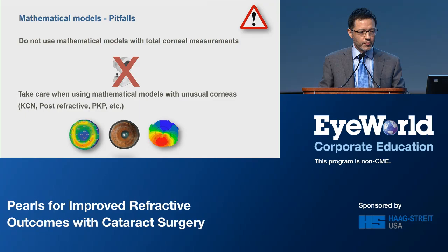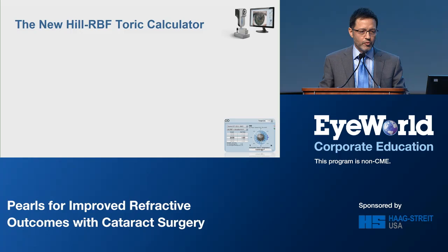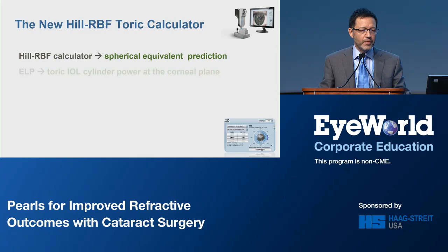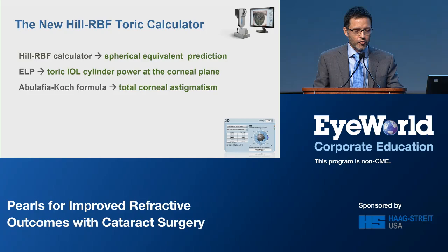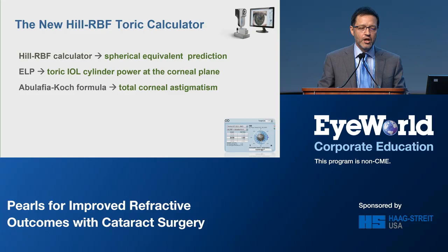So how does the new Hill RBF Toric calculator work? For the spherical equivalent prediction, it uses the Hill RBF calculator. For the Toric cylinder power at the corneal plane, it uses the effective lens position. And for the total corneal astigmatism, it uses the Abulafia-Koch formula. I'm very happy that Haag-Streit and Dr. Hill have chosen our formula to be on the LenStar, because this is one of my favorite devices to measure corneal astigmatism.